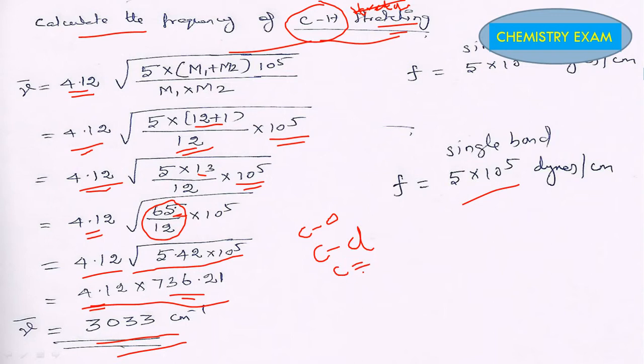Like C≡C, or NH, or C≡O. Only we can change this force constant value. Suppose single bond means 5×10^5, C triple bond means 15×10^5, C double bond means 10×10^5, and the remaining things M1, M2 accordingly—which atom is present, from that atom's molecular weight we can use. So we can calculate the wave number for whatever functional groups are present using this formula: nu bar equals 4.12 times the square root of F/μ.